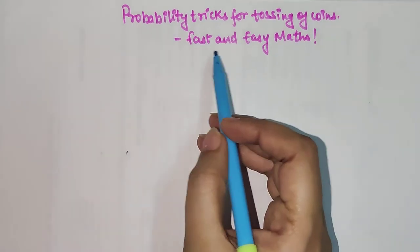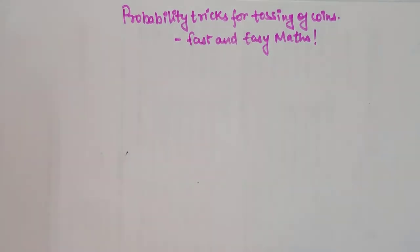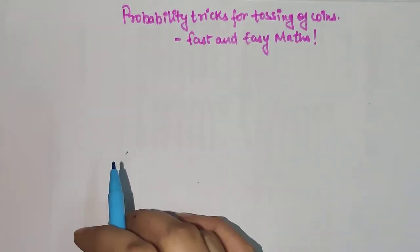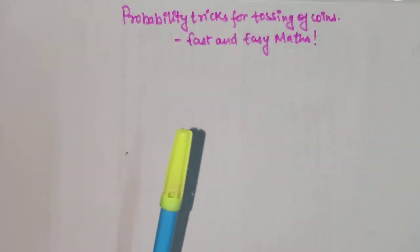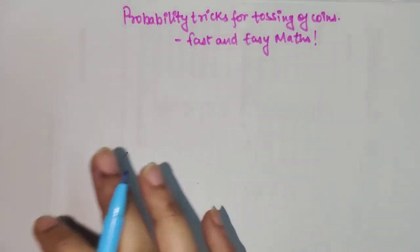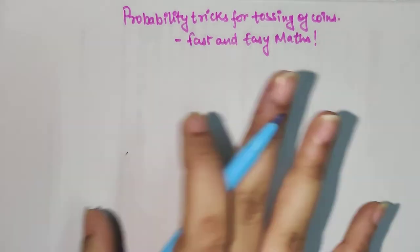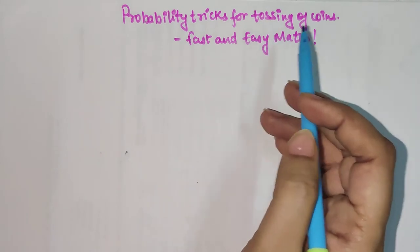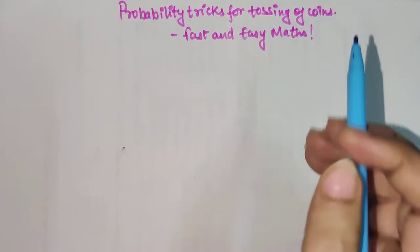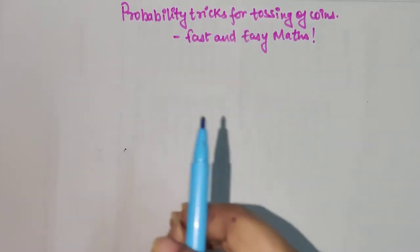Welcome everyone to my channel Fast and Easy Maths, which is dedicated to giving you tips and tricks related to mathematics. Today I am going to show you a trick with which you will be able to solve any probability question related to tossing of coins in seconds — in a matter of actually 5 seconds.